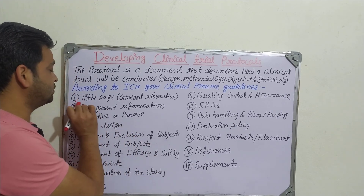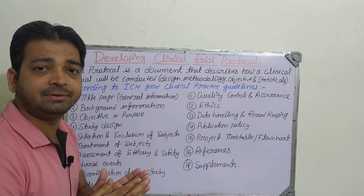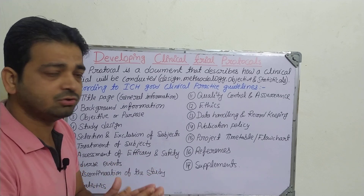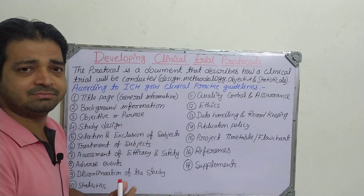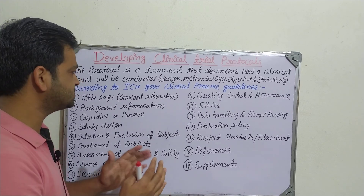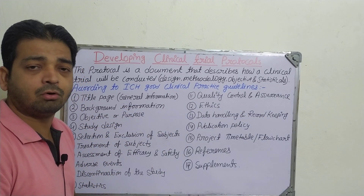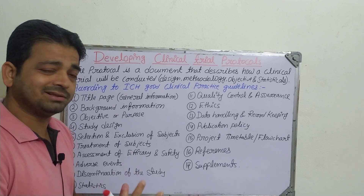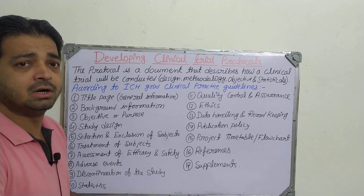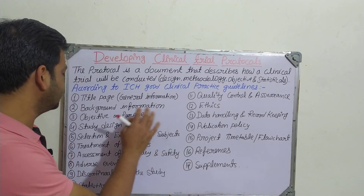Generally, the protocol contains the following. The first one is the title page or general information — what is the title, for example, anti-diabetic activity of so-and-so molecule or new chemical entity. General information about what diabetes mellitus is and what kind of activity the drug molecule may have — just a summary. Then background information: who are going to be the volunteers, male or female, what is the age group, whether they are suffering from type 1 or type 2 diabetes, what is the climate and temperature — that background of the study has to be revealed.